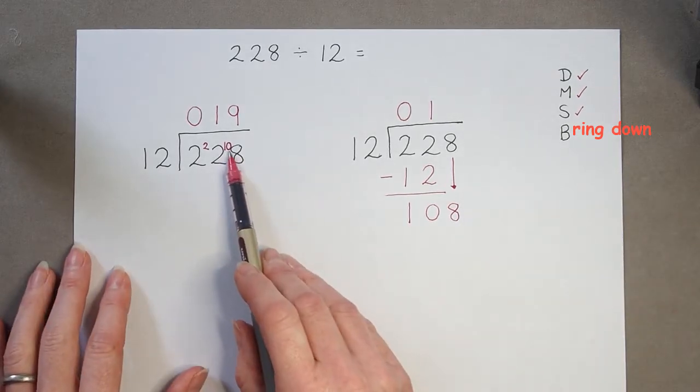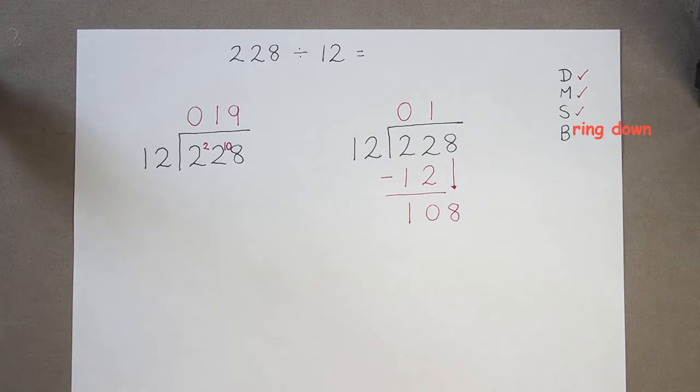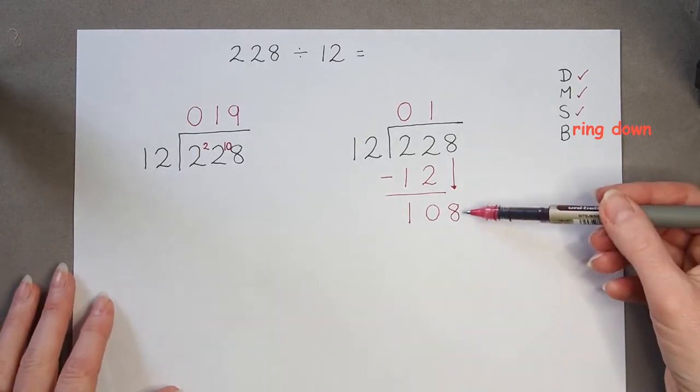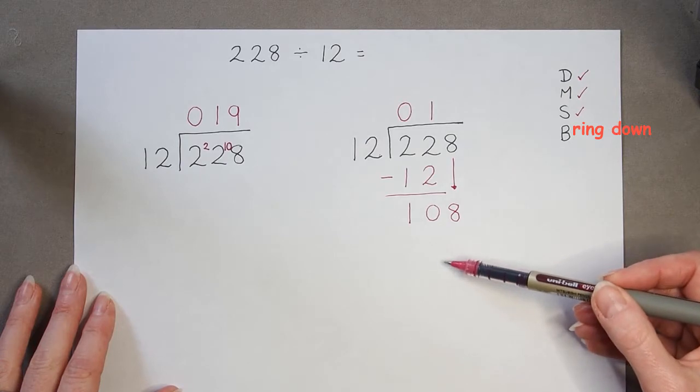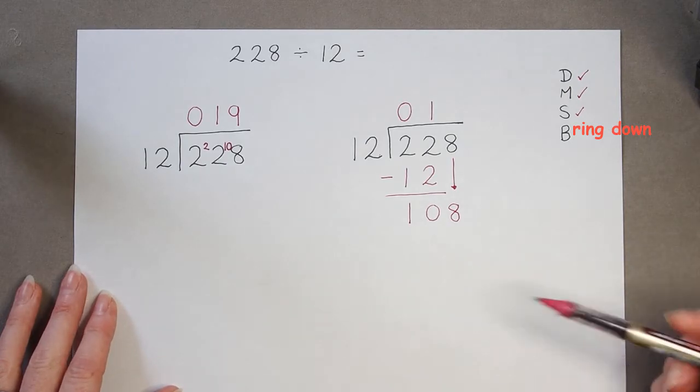But it means because we've got two digits, it's not so squashed. And it means if our calculation continues, we can carry on subtracting as we go along.